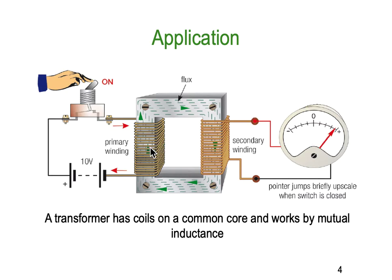You'll see the needle swing over only for a split second — only while the magnetic field is actually changing. It works well for transformers on AC where the current, and therefore the magnetic fields, are constantly changing. You get this great ability to use the magnetic field to transmit energy across the transformer. The two coils are connected together by the one magnetic field — that's mutual inductance.